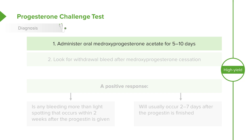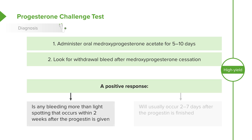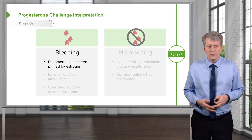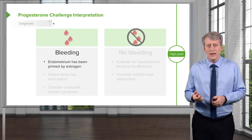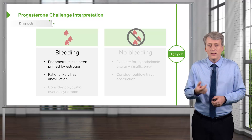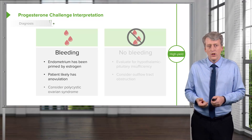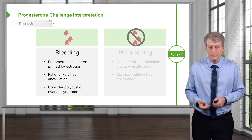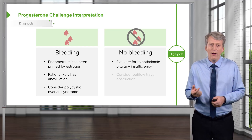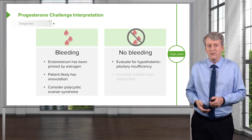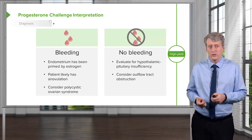One way to assess secondary amenorrhea is the progesterone challenge test. We administer oral progesterone for 5 to 10 days, then look for withdrawal bleeding after the medicine is stopped. A positive test is any bleeding more than light spotting occurring within 2 weeks of stopping progesterone, usually between 2 and 7 days after. If there is bleeding, the endometrium has been primed by estrogen, and the patient likely has anovulation — consider polycystic ovarian syndrome. If there is no bleeding, evaluate for HPO axis insufficiency or outflow tract obstruction.